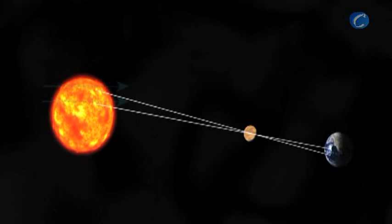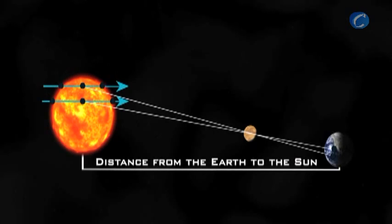And that measurement of the time it took Venus to go across the Sun allowed us to get that distance from the Earth to the Sun and make all the measurements that we know about with respect to the size of our solar system.